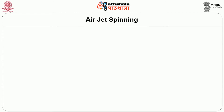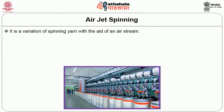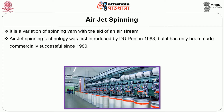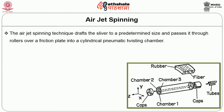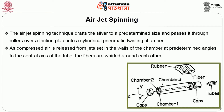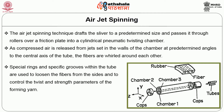Next is airjet spinning, a variation of spinning yarn with the aid of an air stream. Airjet spinning technology was first introduced by DuPont in 1963 but has only been made commercially successful since 1980. It is a pneumatic process that produces yarn directly from high quality drawing sliver of wool, man-made staple or man-made and cotton staple blends. The airjet spinning technique drafts the sliver to a predetermined size and passes it through rollers over a friction plate into a cylindrical pneumatic twisting chamber. Compressed air is released from jets set in the walls of the chamber at a predetermined angle to the central axis of the tube, causing the fibers to be whirled around each other. Special rings within the tube are used to loosen the fibers from the sides and to control the twist and strength parameters of the forming yarn.